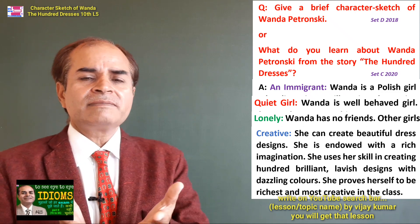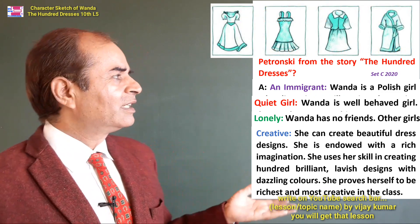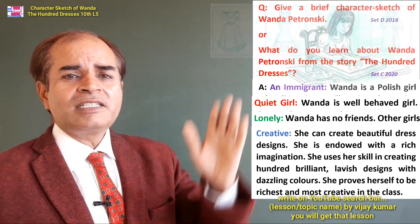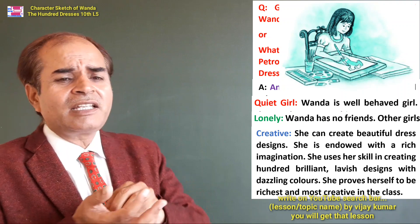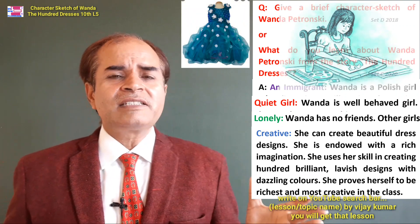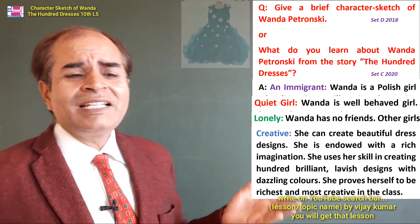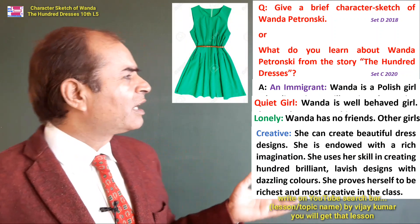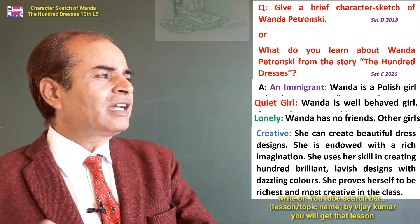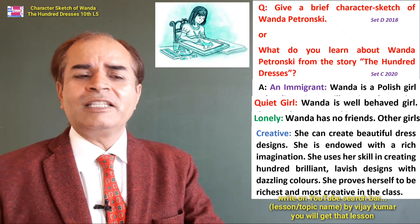She can create beautiful dress designs — she is endowed with a rich imagination. She uses her skill in creating a hundred brilliant, lavish designs with dazzling colors. She proves herself to be the richest and most creative in the class. So these four are the characteristics: an immigrant, a quiet girl, a lonely girl, and a creative girl.